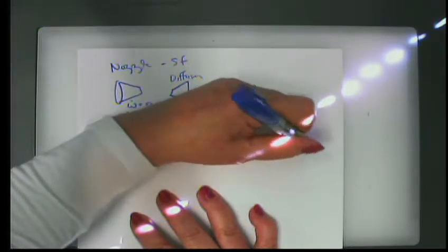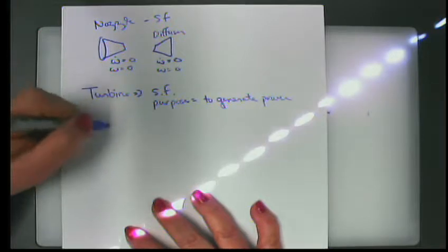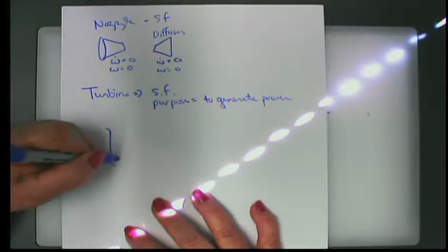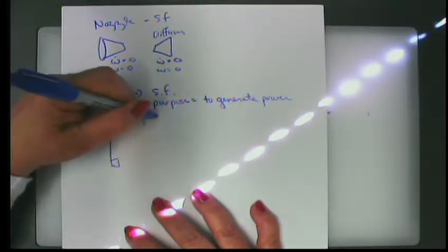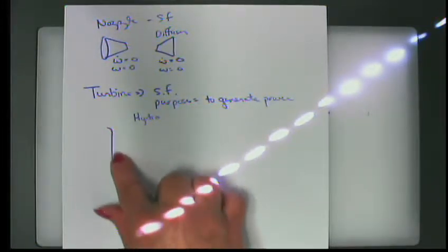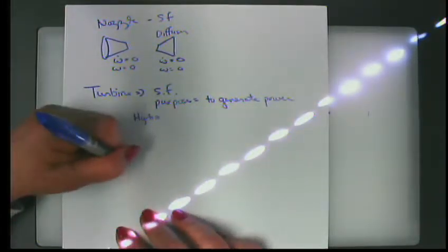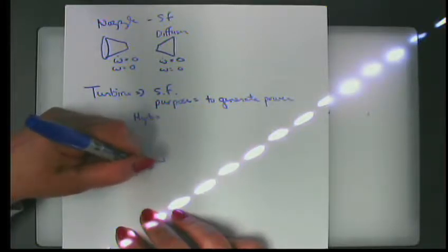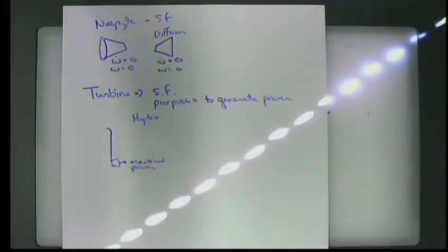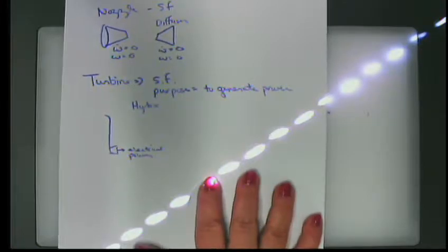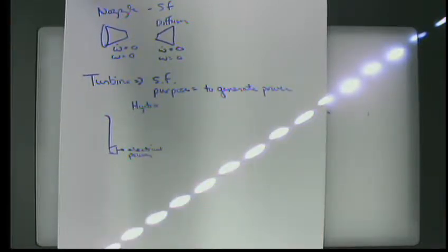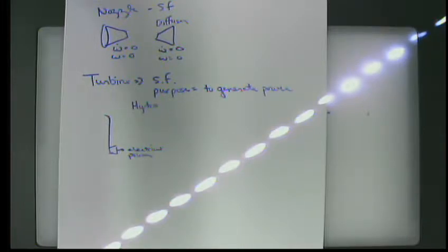One common application for a turbine is at the base of a waterfall or dam. A lot of power in the world is generated by hydro — hydroelectric — where we take a potential energy difference and turn it into electrical power. A turbine does that using the Faraday effect to generate electrical power. In many parts of the world, hydro is the primary source of power.